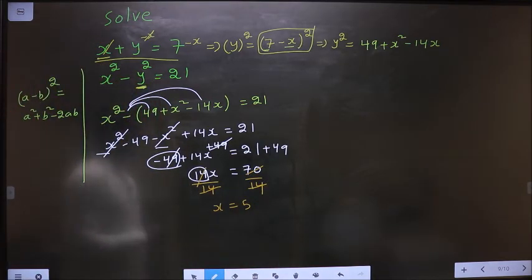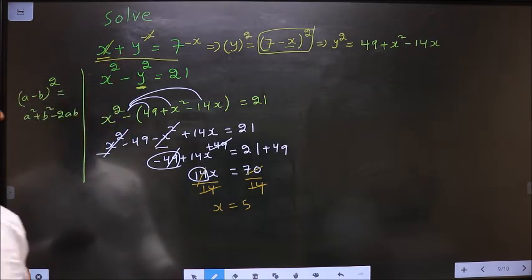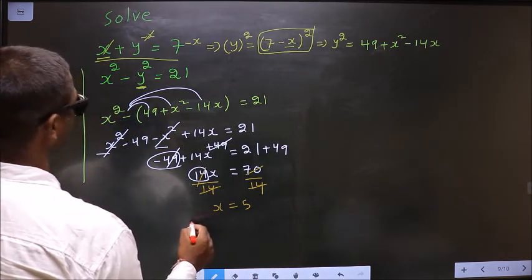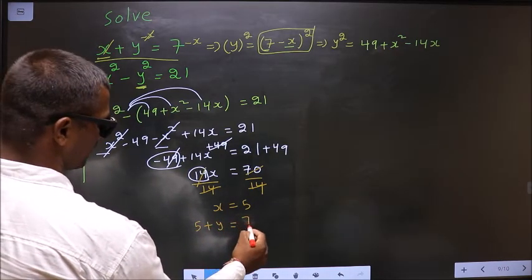So now to get y, replace x equal to 5 in this. So what do we get? 5 plus y equal to 7.